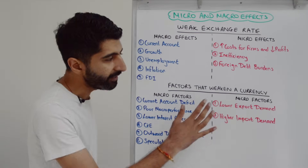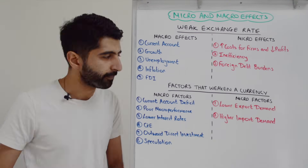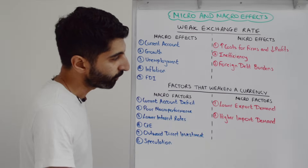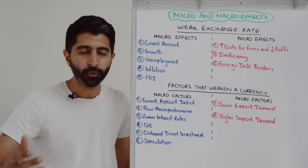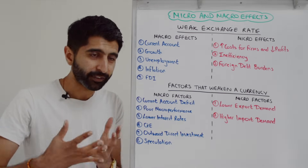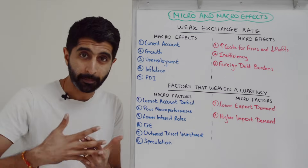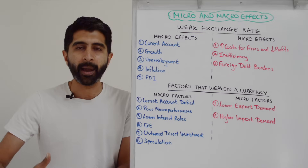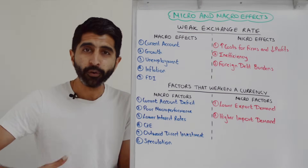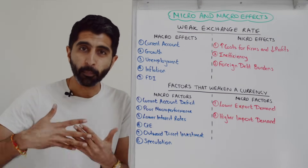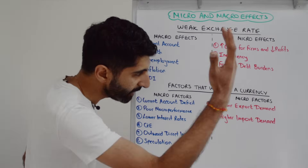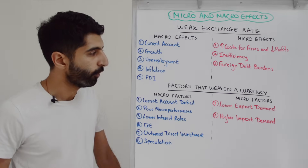Micro factors are rooted in basic demand and supply. Anything that means lower export demand — lower incomes abroad, or a shift in fashion or taste — will mean lower demand for the currency, weakening it. Conversely, anything that means higher import demand means more supply of the domestic currency being sold for foreign currency, weakening its value. So anything driving higher import demand is a micro factor in weakening the exchange rate.